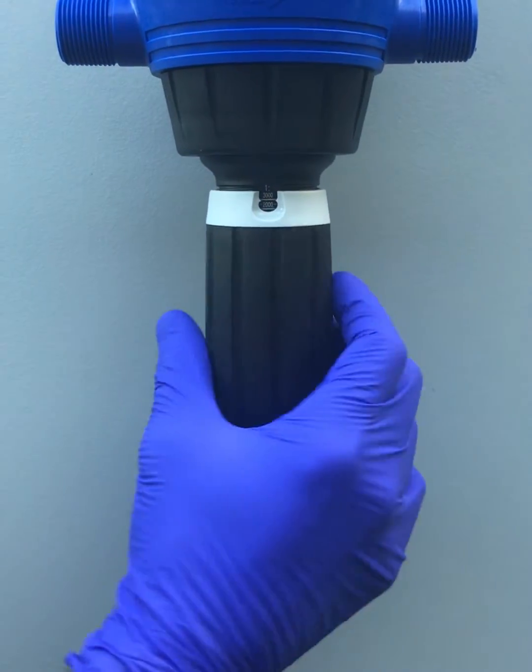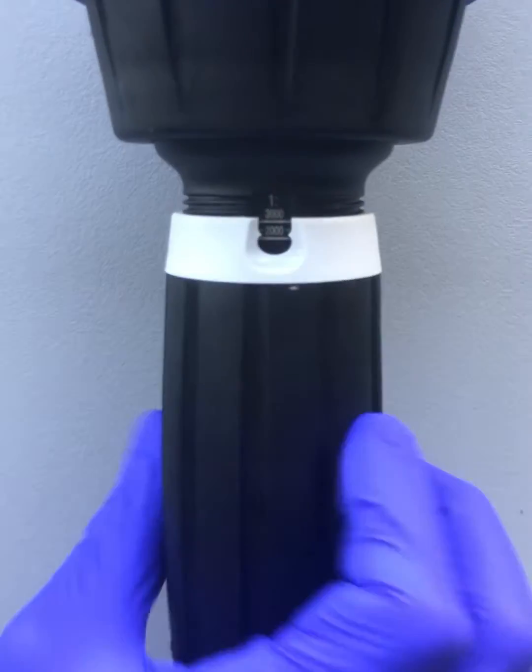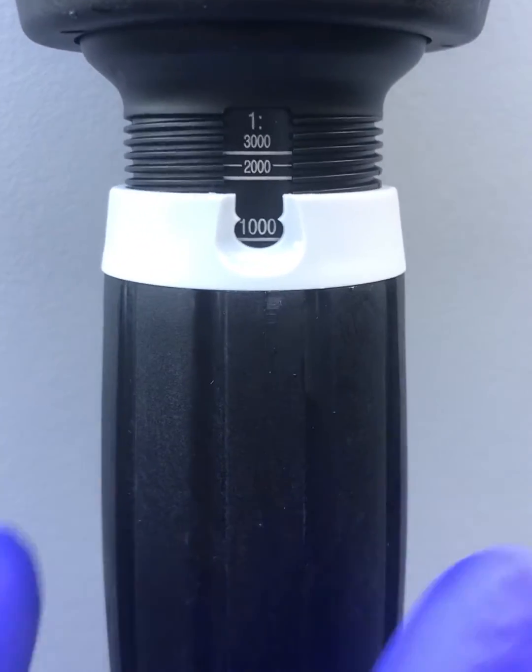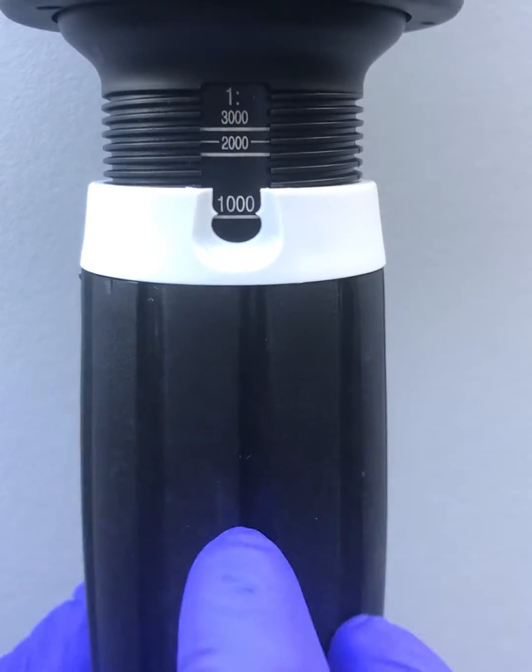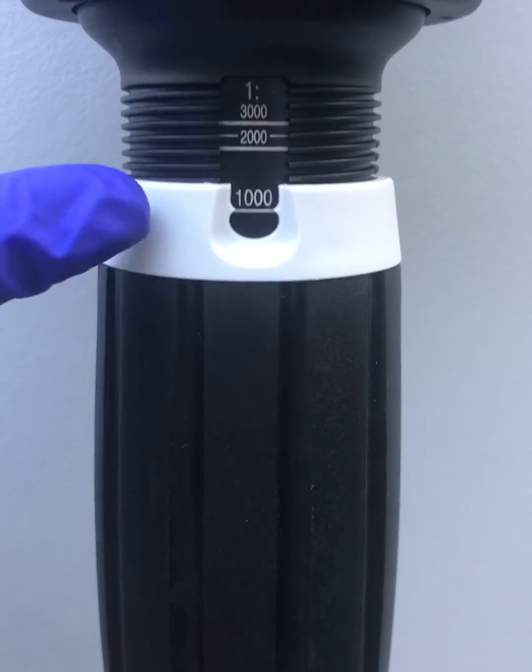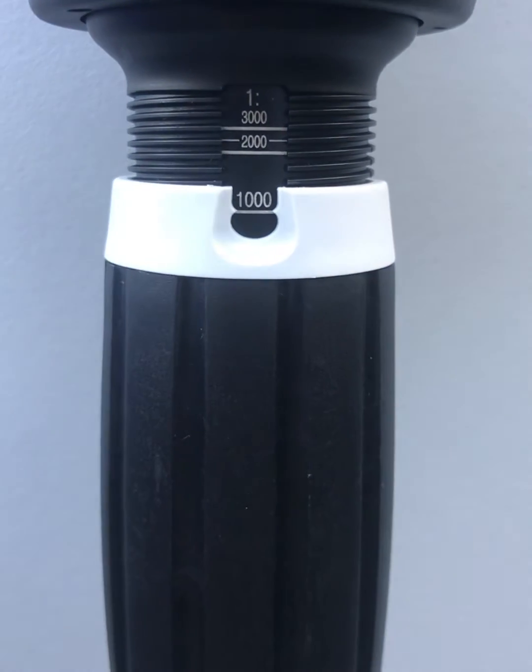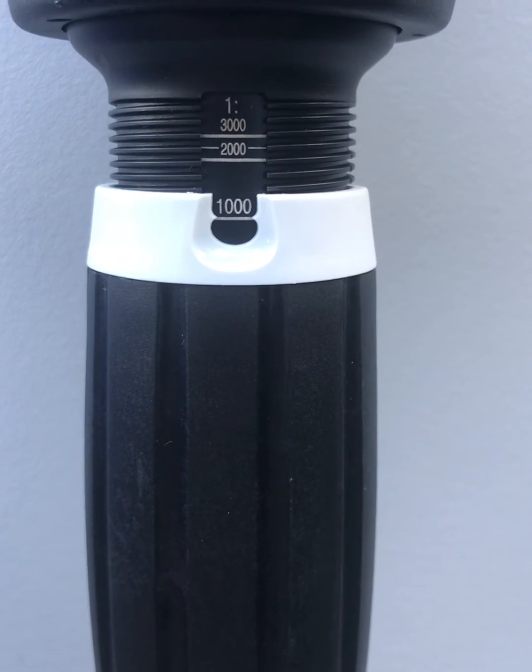Then grab your adjustment sleeve and turn that until you reach your desired rate. You want to make sure that the teeth on your indicator are pointing at the rate or the percentage that you're looking for.